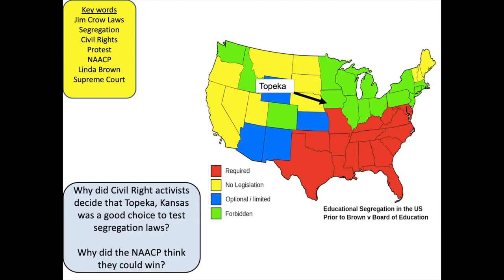Let's look at where Topeka is. This state is Kansas. The red states on the map show that educational segregation was compulsory. The green states show areas where education was not segregated and it was forbidden to segregate. The blue states show that it was optional or limited, and the yellow states show there was no specific legislation. Now think: why did civil rights activists decide that Topeka, Kansas was a good choice to test segregation laws? Why did the NAACP think they could win by choosing a case here, rather than a state in the deep south? Write down your ideas on your worksheet.